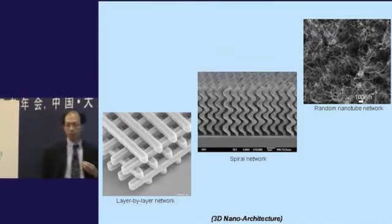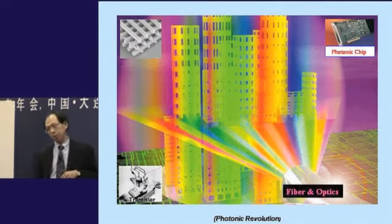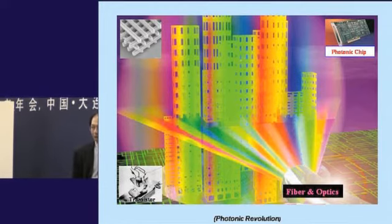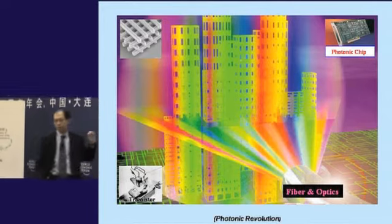The nanostructures here will enable us to a new photonic revolution of the 21st century, allowed us to mold the light, guide the light, process the light, all on chip, and that will be something very important for the next generations.